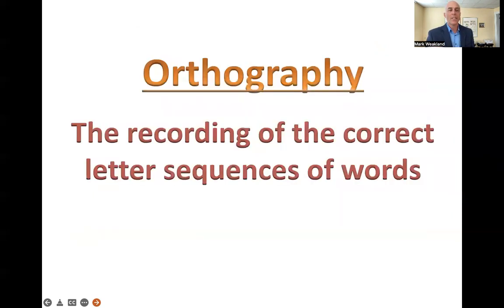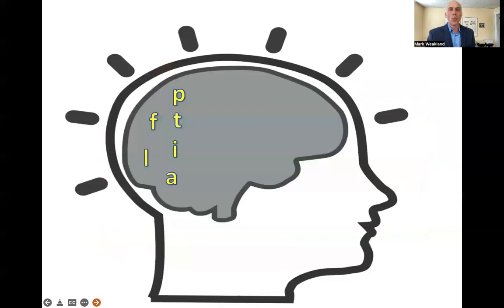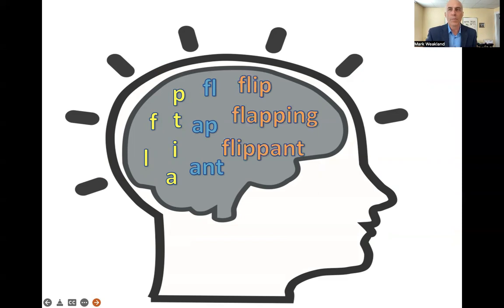So orthography, what is that? Here's a nice definition of it. The recording of the correct letter sequences of words. It begins like this in our brain, our reading brain. Sounds are mapped with letters. This is the orthographic mapping that takes place. Sounds and letters come together. Then we might get blends and word chunks. Then we put those together to form whole words. And pretty soon, we are storing whole words, words, whole words in our brain reading area. And this is what Mark Seidenberg calls reading, language at the speed of sight. We're reading by sight.